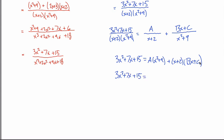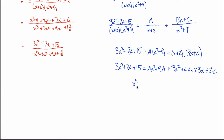I'll expand by getting rid of all the parentheses. On the right: ax squared plus nine a, and then foiling gives bx squared plus cx plus two bx plus two c. Now I can equate coefficients. For x squared terms: three equals a plus b. For x terms: seven equals two b plus c. For constant terms: fifteen equals nine a plus two c.